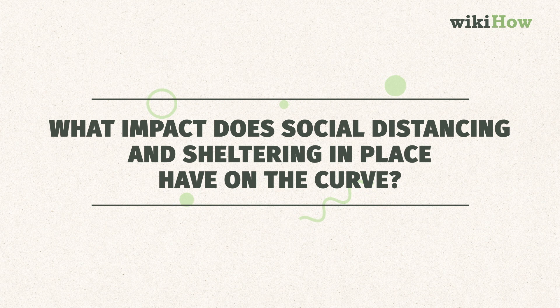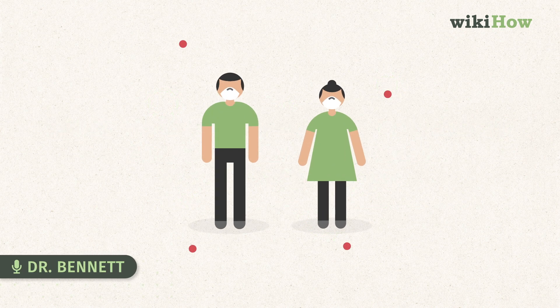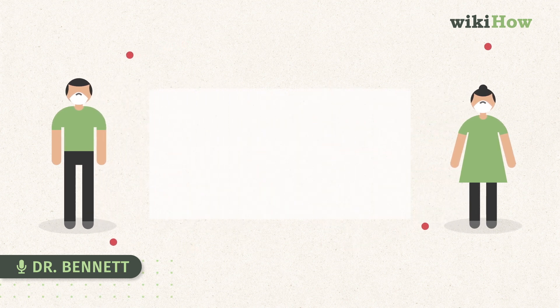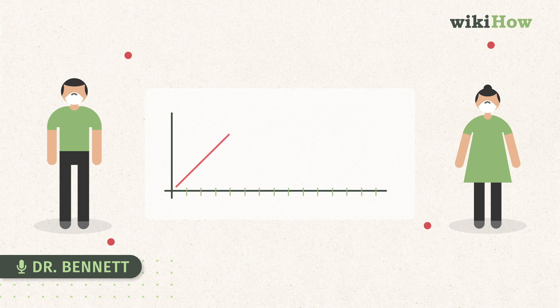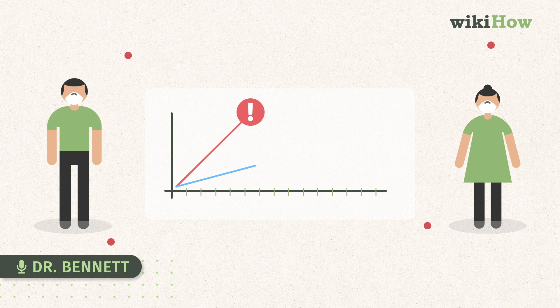What impact does social distancing and sheltering in place have on the curve? When we talk about social distancing and shelter in place, we're trying to reduce the steepness so that the doubling time of the new cases happens over a longer period. And that has two impacts.